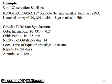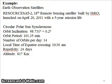The number of orbits per day would be around 14. The local time of equator crossing is around 10:30 a.m., and the revisit period is 24 days — meaning the satellite takes 24 days to come back to the same location on the surface of the Earth. The orbital altitude at which Resource Sat 2 is placed is 817 km, within the general range of 600 to 2,000 km for polar orbiting satellites.